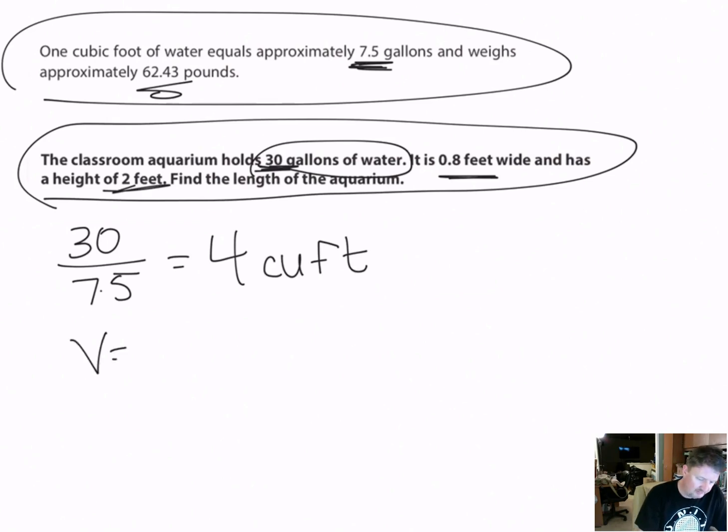I can say volume equals length times width times height. I know my volume is 4. I don't know the length - I'm looking for the length. My width is 0.8, so I'm multiplying those two together, and then my height is 2. I'm going to multiply 0.8 times 2 and get 4 equals 1.6 times l.